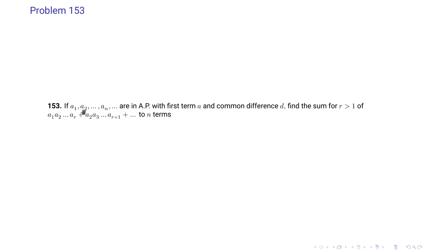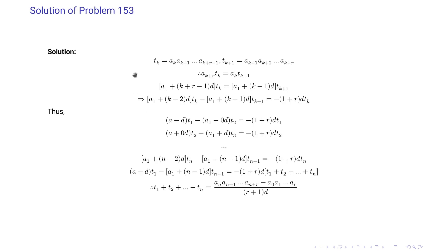Problem 153: if a1, a2, ..., an are in AP with first term a and common difference d, find the sum for r greater than 1 of (a1·a2···ar) + (a2·a3···a_{r+1}) up to n terms. The k-th term is T_k = a_k · a_{k+1} ··· a_{k+r−1} and the (k+1)-th term is T_{k+1} = a_{k+1} · a_{k+2} ··· a_{k+r}. We observe that if we multiply T_k by a_{k+r} and T_{k+1} by a_k, both sides become equal.